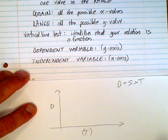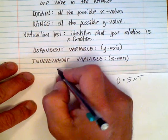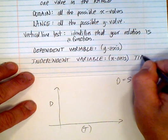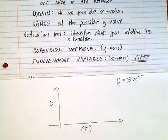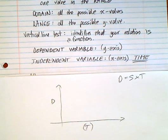And the one thing that you will know for certain is that time is always the independent variable, because essentially, if you thought about it, everything depends on time.